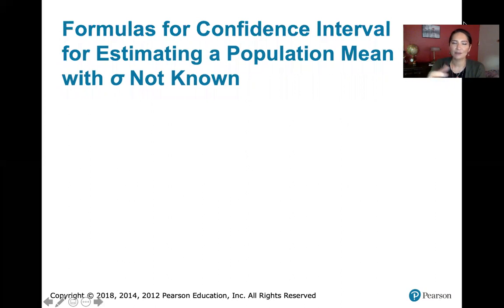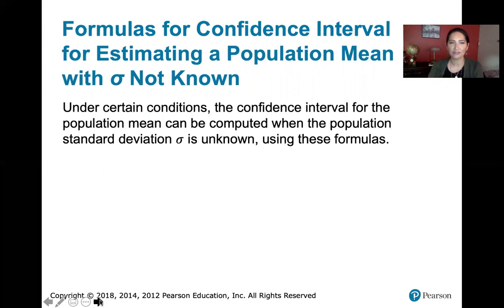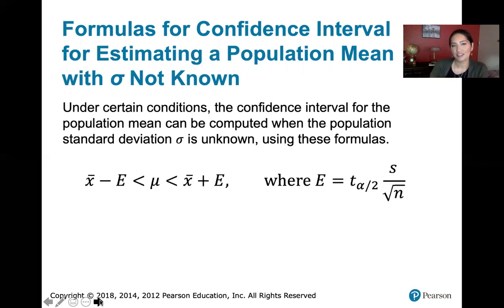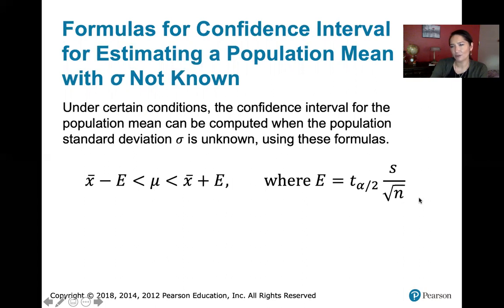Now I'm just going to give you a preview — we'll talk about this more in the next video. Under certain conditions, the confidence interval for the population mean can be computed when the population standard deviation is unknown. The population mean mu is between the sample mean minus the margin of error and the sample mean plus the margin of error, where the margin of error is t sub alpha over 2 times the sample standard deviation divided by the square root of the sample size.